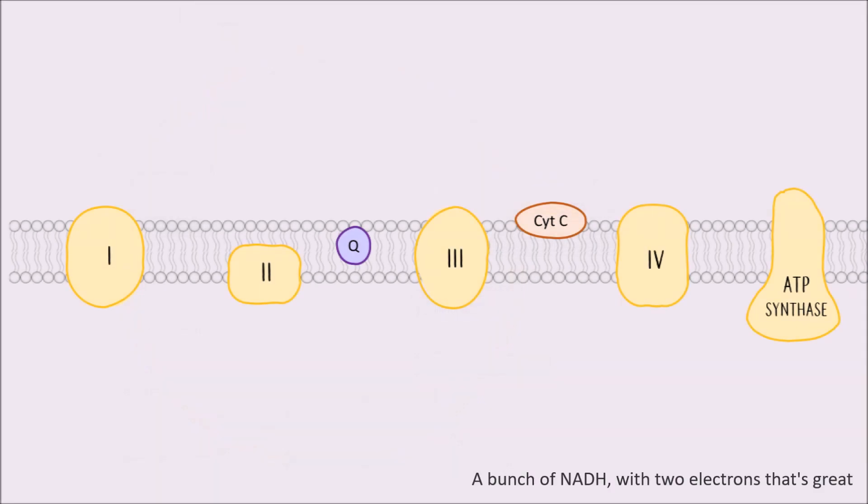A bunch of NADH with two electrons, that's great, but they must move to where they're needed more. They're in the matrix now, but they must travel somehow to be inside the intermembrane space. Two protons given away, coenzyme Q is what takes them through the action.